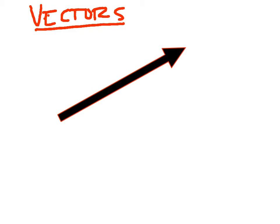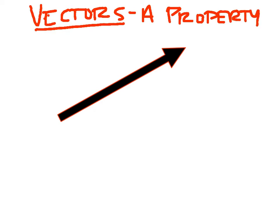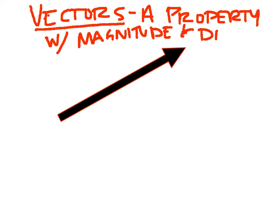The definition that we're going to go with for a vector is a property with both magnitude and direction.